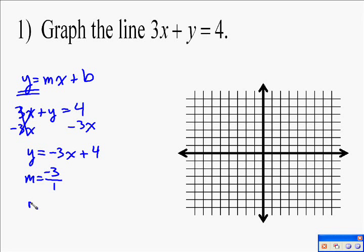Now it is solved for y. I don't have to divide by anything, so my slope is negative 3, and we always put it over 1 whenever we're doing slope. And then my y-intercept is 4.